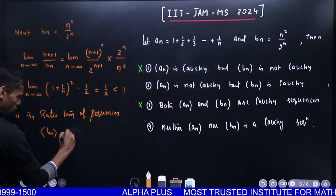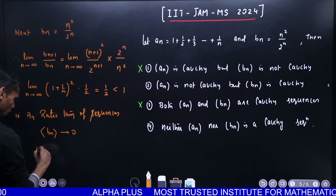Sequence BN will converge to zero. So it's convergent, and therefore it's also Cauchy.